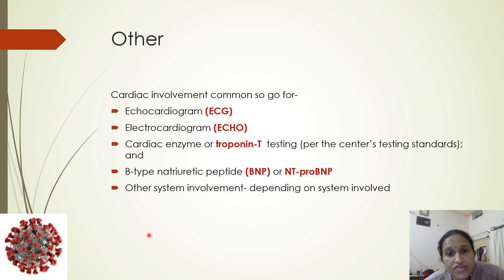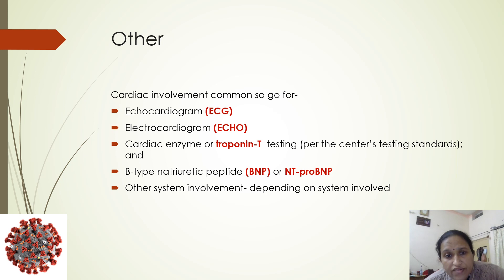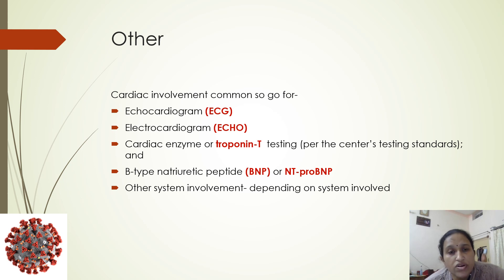As cardiac involvement is more common in MIS cases, we must obtain echocardiography, electrocardiography, cardiac enzyme or troponin-T levels, and BNP or N-terminal pro-BNP levels. We also go for other investigations depending on which organ is involved.